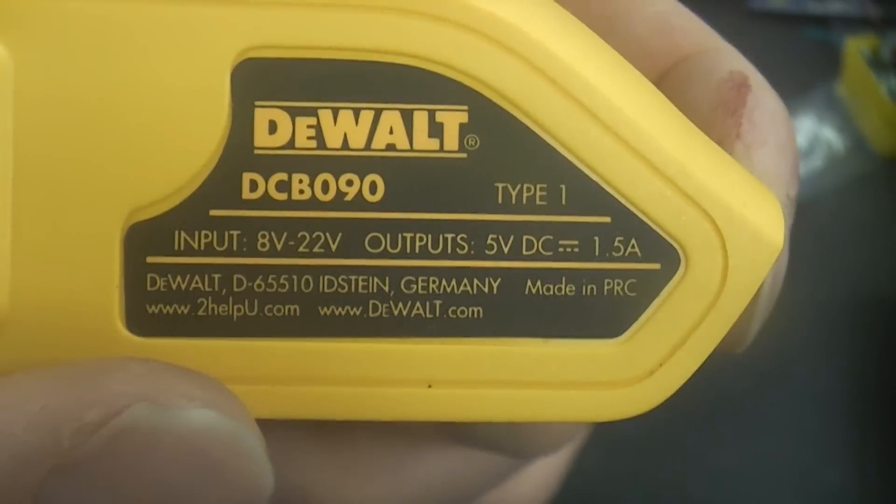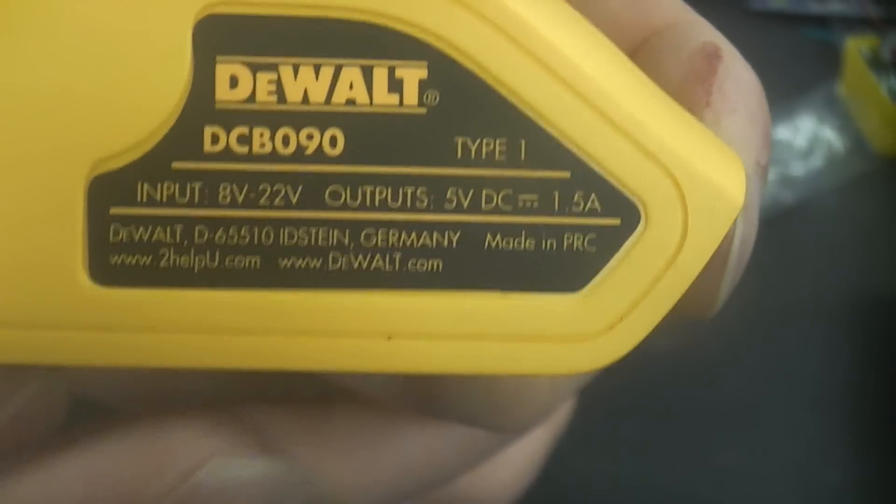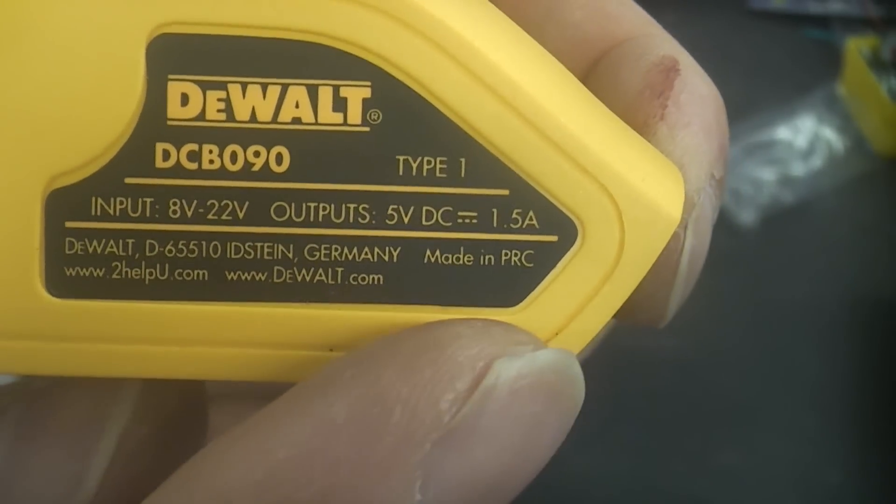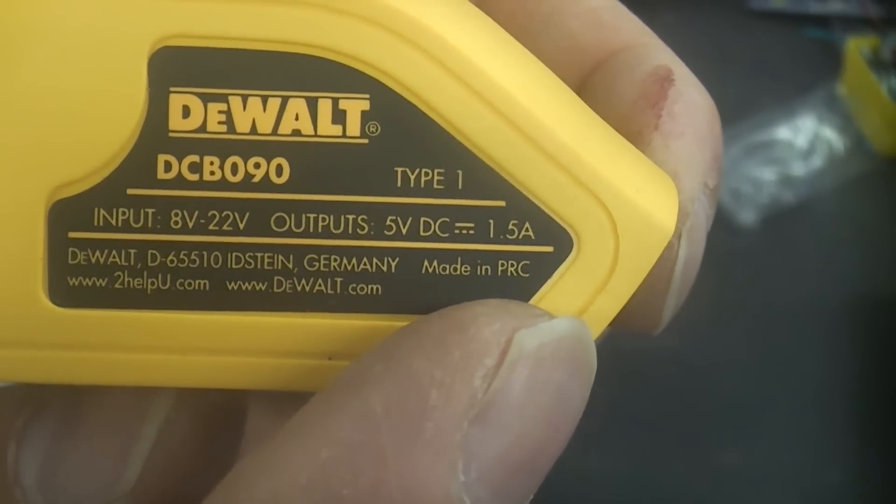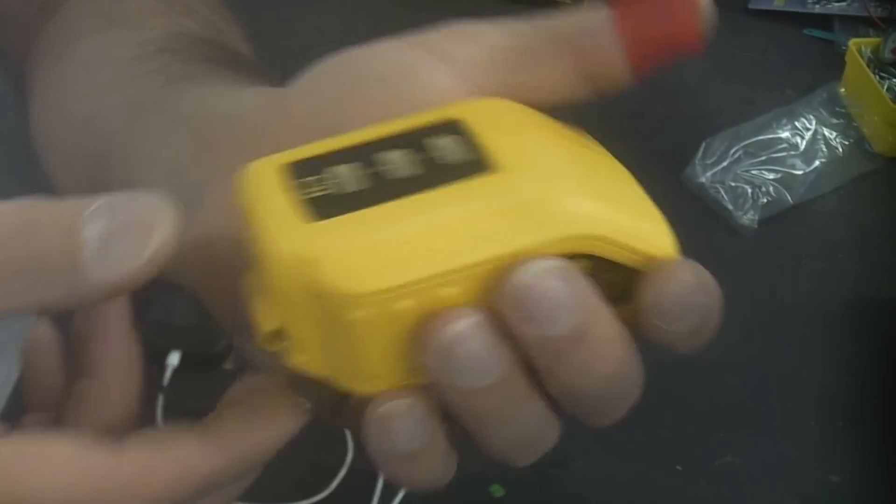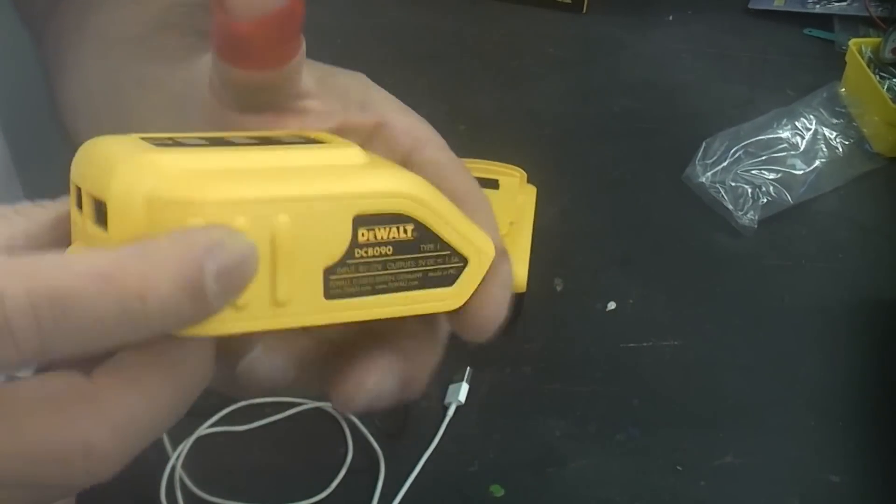If you look at the label it says DEWALT Idstein in Germany but it's actually made in China. At the end there it says made in People's Republic of China. I'm sure this will still be reliable as most things are made in China these days.